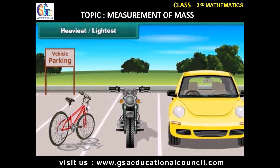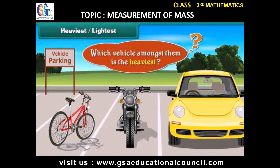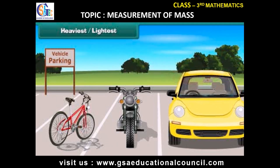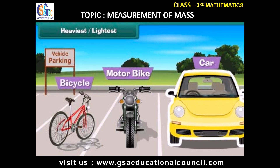Look at these vehicles parked in the parking bay. Which vehicle amongst them is the heaviest? The car is the heaviest vehicle. The motorbike is less heavy than the car, and the bicycle is the least heavy amongst all of them.